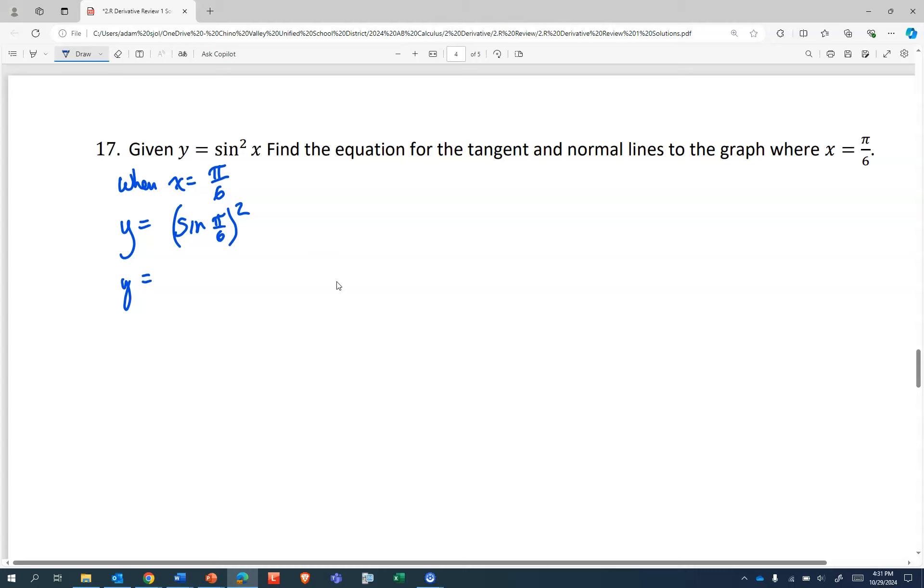Let's see, sin(π/6) is 1/2, squared is 1/4. And in order to get tangent and normal lines, we're going to need a slope, so that's going to be a derivative.